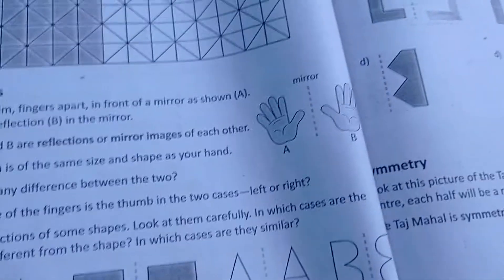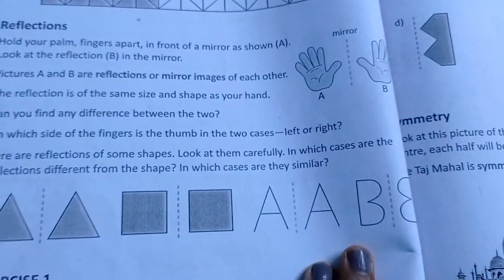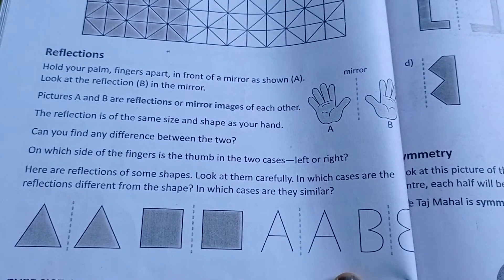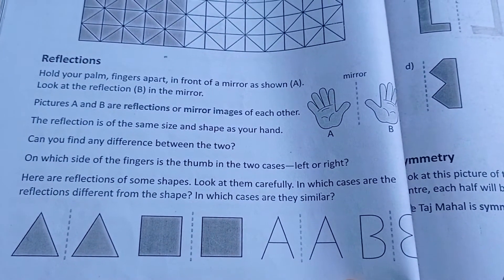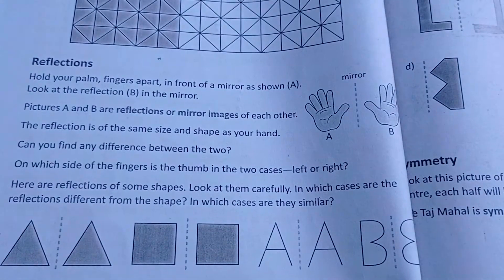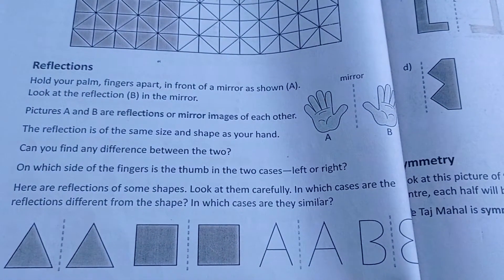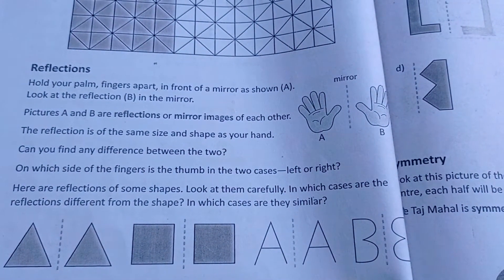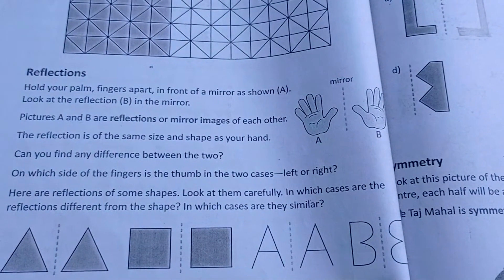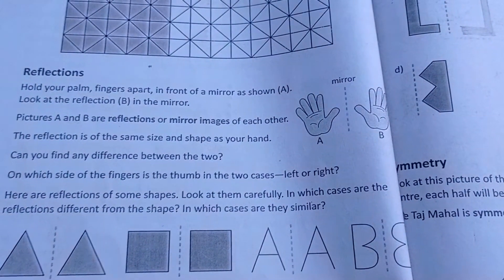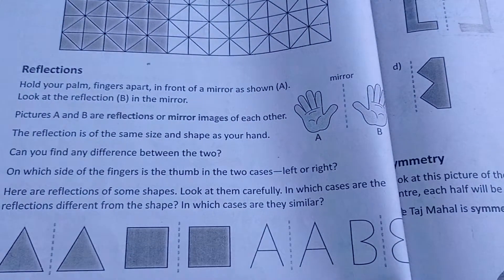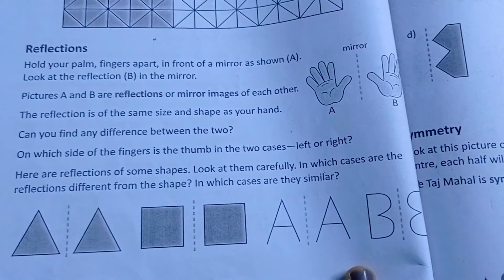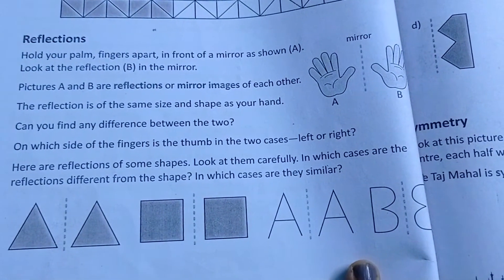As you can see this picture, A and B — the hands — they are showing that picture A and B are reflections or mirror images of each other. That means if you show the left, you will see the right in the mirror. That is reflection.